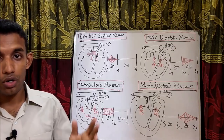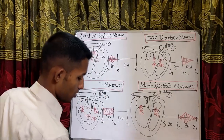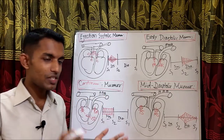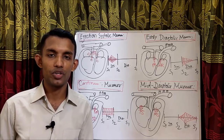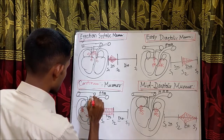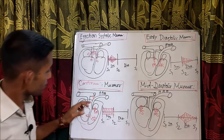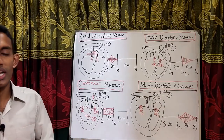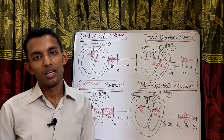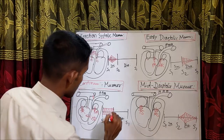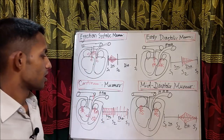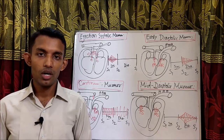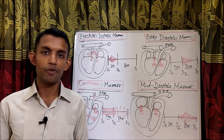There is one more murmur — that is called continuous murmur. Continuous murmur means whether it is systole or diastole, whatever the phase is, there is always murmur. That is PDA — patent ductus arteriosus — which means there is a communication between the pulmonary artery and aorta. In that case, in the whole systole and diastole, there will always be murmur. That is called continuous murmur. Hope you liked this video — give your feedback in the comments below and subscribe for next videos.